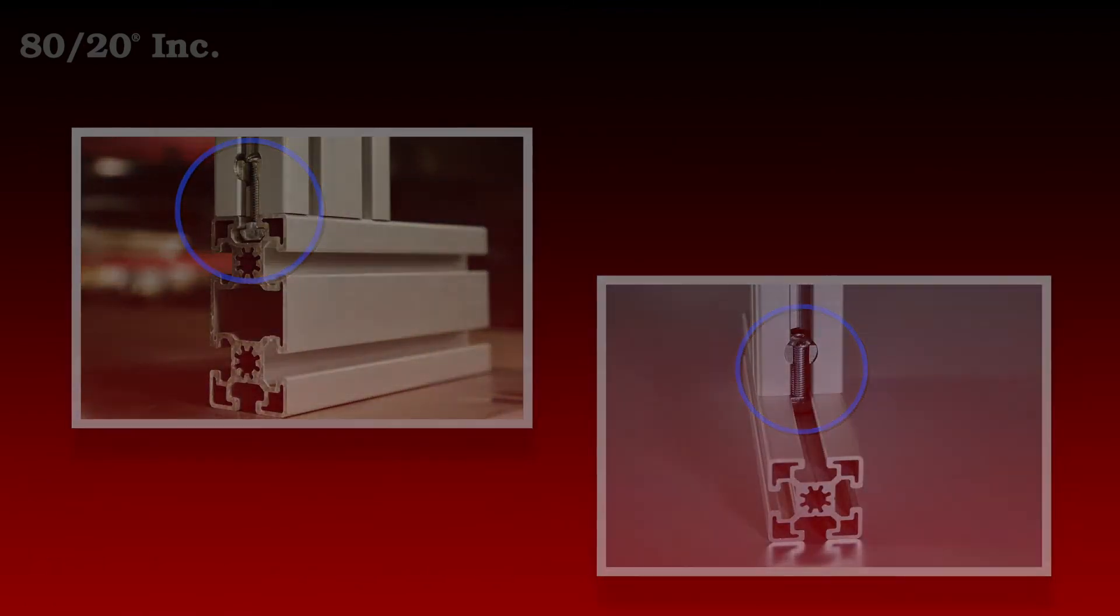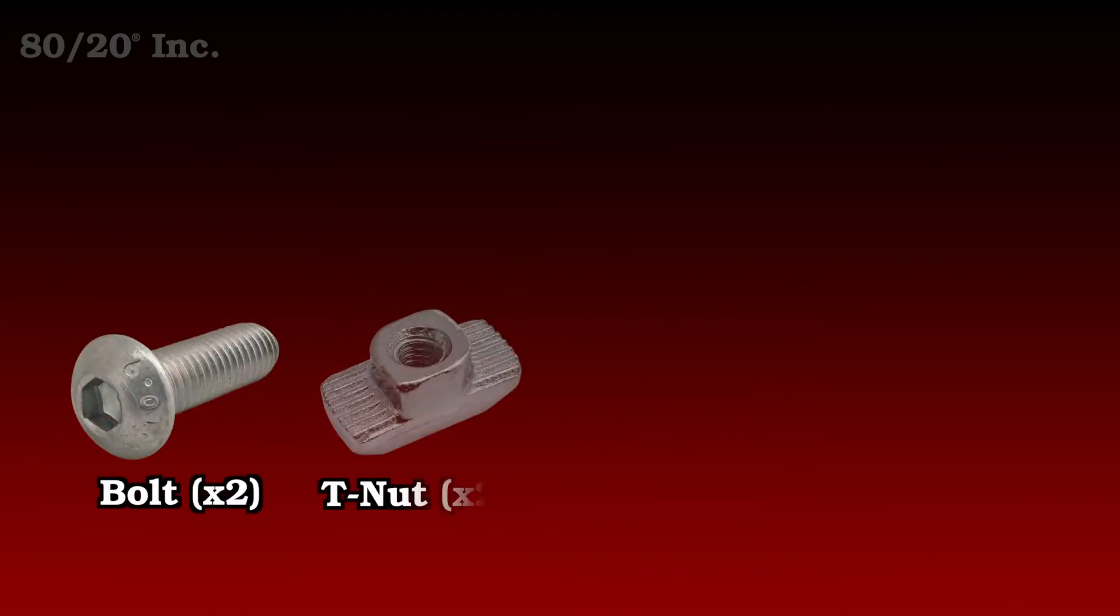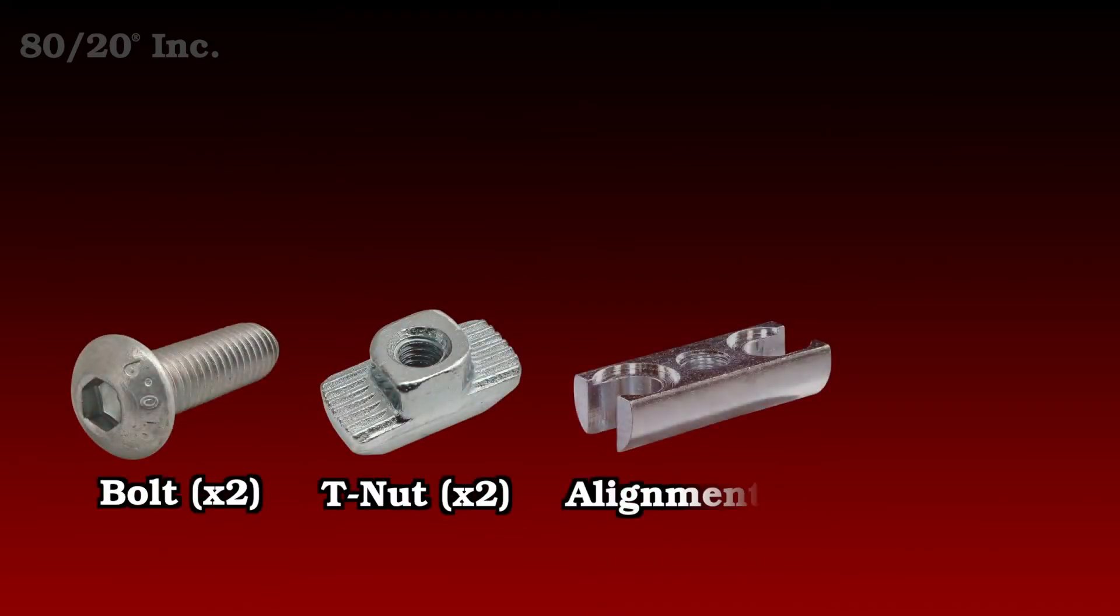The bolt connector comes in six parts. You have two bolts, two T-nuts, an alignment pin, and a spacer.